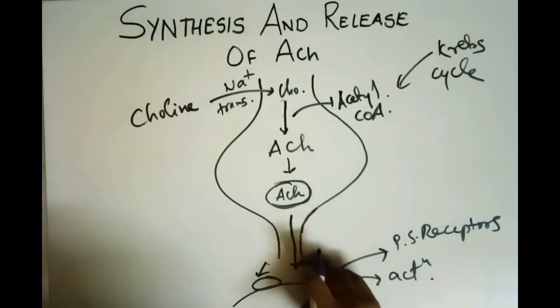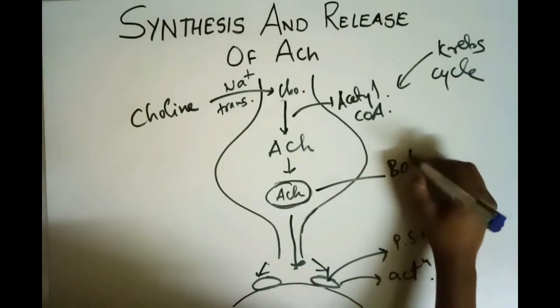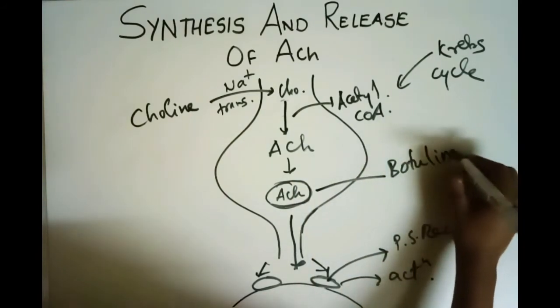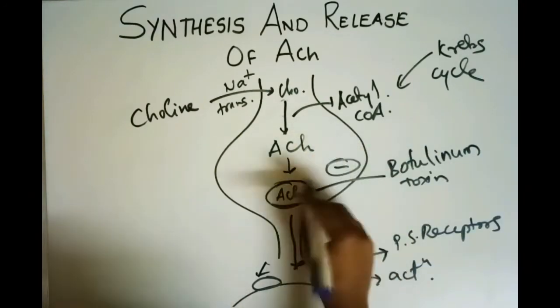To inhibit the release of acetylcholine, botulinum toxin inhibits the release of acetylcholine.